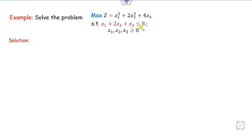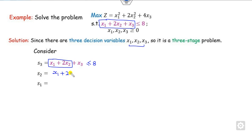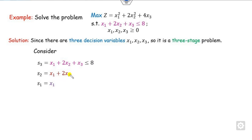Now quickly look at example 2. Here the constraints are less than or equal to, and the problem is maximization (the last example was minimization). Again, there are three variables, so s3 is the full constraint, s2 consists of x1 and x2, and s1 consists of only x1. You can find x1+x2 as s3 minus x3, and x1 as s2 minus 2x2.